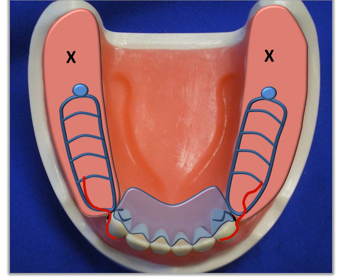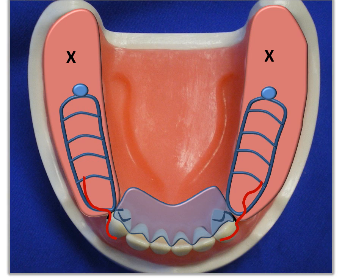We will use acrylic relineable bases, which need to be checked before delivery to determine if an altered cast impression is needed — that is the subject of a different lecture. Routine maintenance is essential to maintain the health of the abutments. This concludes the design template for a mandibular Kennedy Class I removable partial denture, illustrated with the simulated clinical findings on this cast.